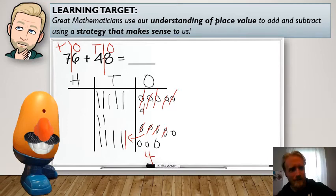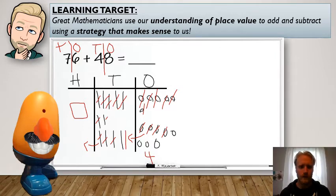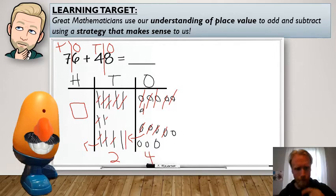Exactly. Regroup again. All right. So same thing. One, two, three, four, five, six, seven, eight, nine, 10. Draw an arrow. And now I'm going to represent a new flat. All right. So that leaves me, let's see, two tens left over.